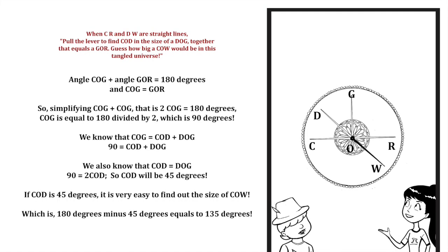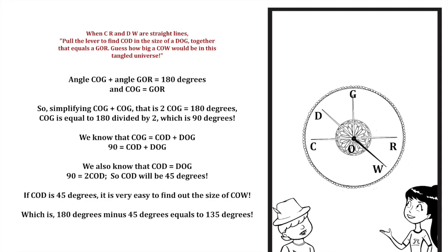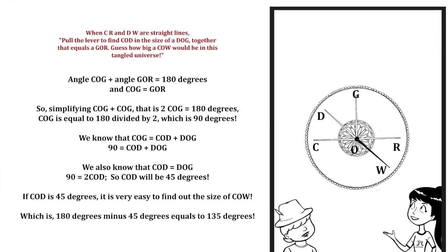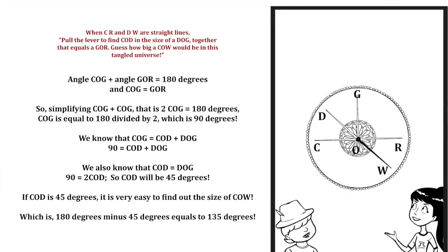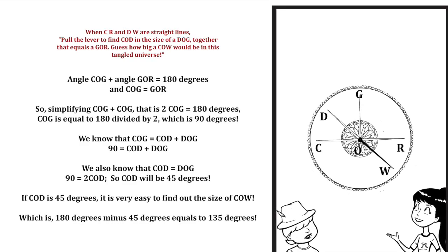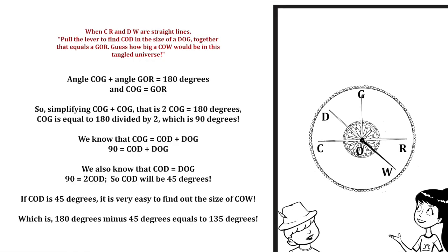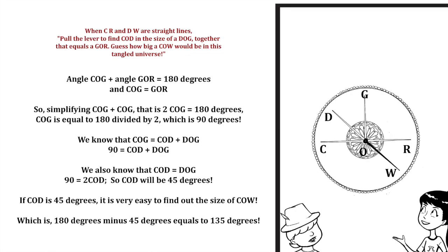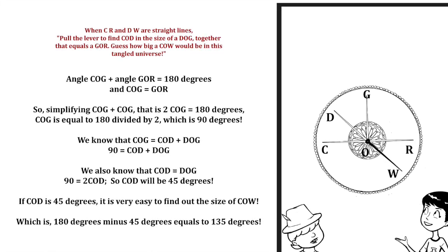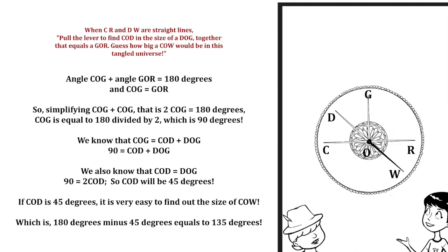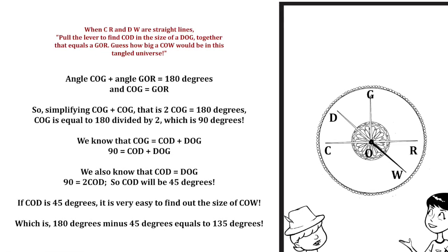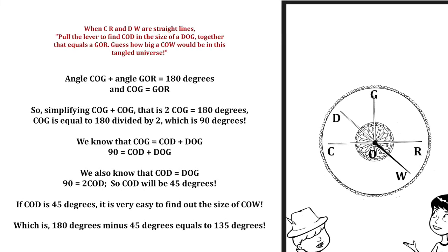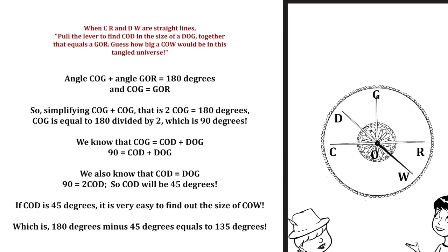It says angle C-O-G and angle G-O-R equals 180 degrees, and C-O-G equals G-O-R. So simplifying, C-O-G and C-O-G gives us 2 times C-O-G equals 180 degrees. C-O-G is equal to 180 divided by 2, which is 90 degrees. We know that C-O-G equals C-O-D and D-O-G. So 90 equals C-O-D plus D-O-G. We also know that C-O-D equals D-O-G, so 90 equals 2 times C-O-D, meaning C-O-D will be 45 degrees.